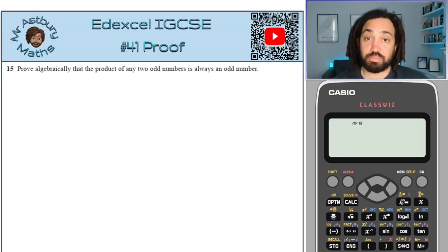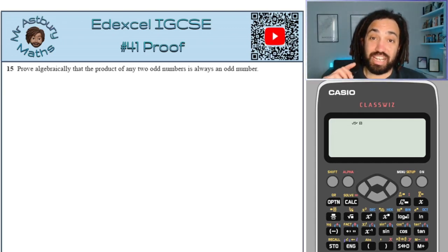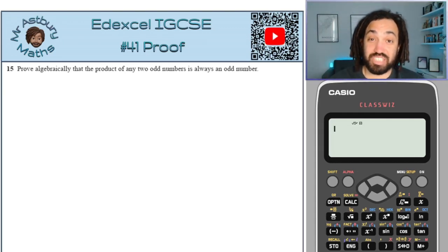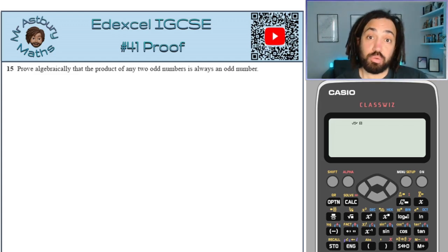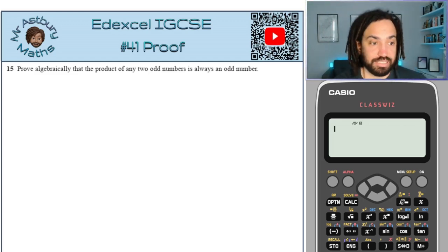Hello, my name is Mr. Asprey and this is my Edexcel iGCSE exam series 2, and this is number 41: proof. Right, let's get it.